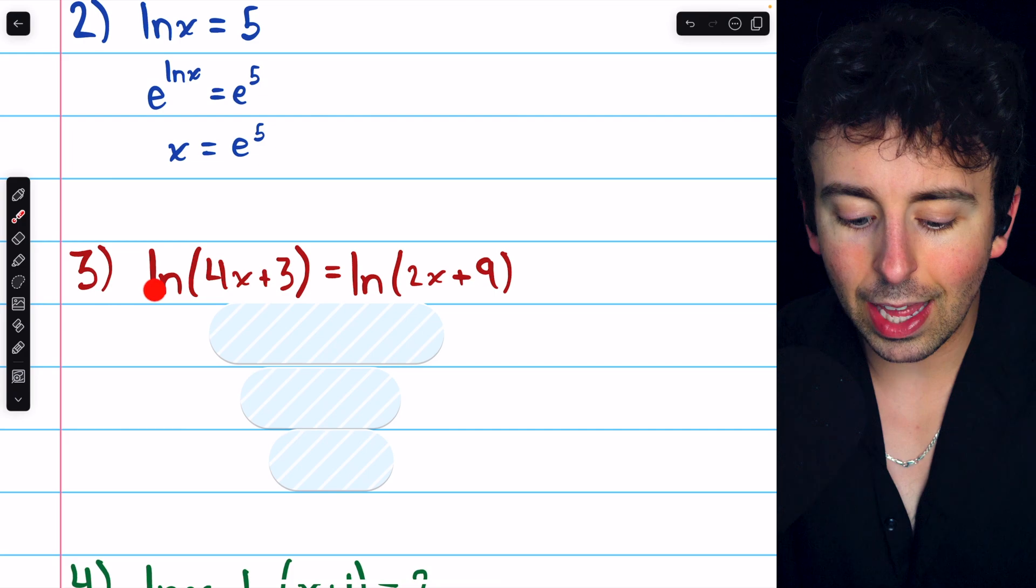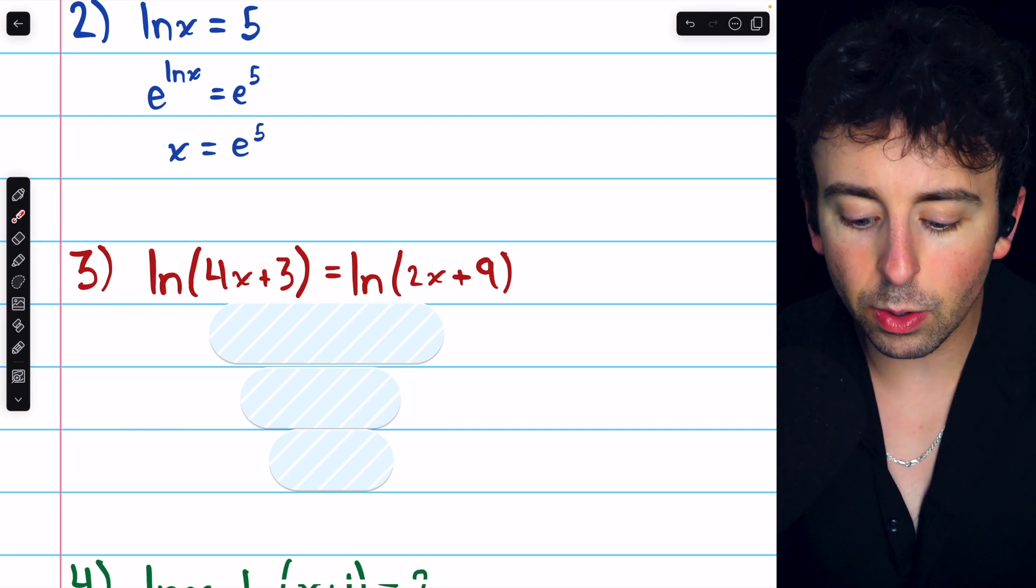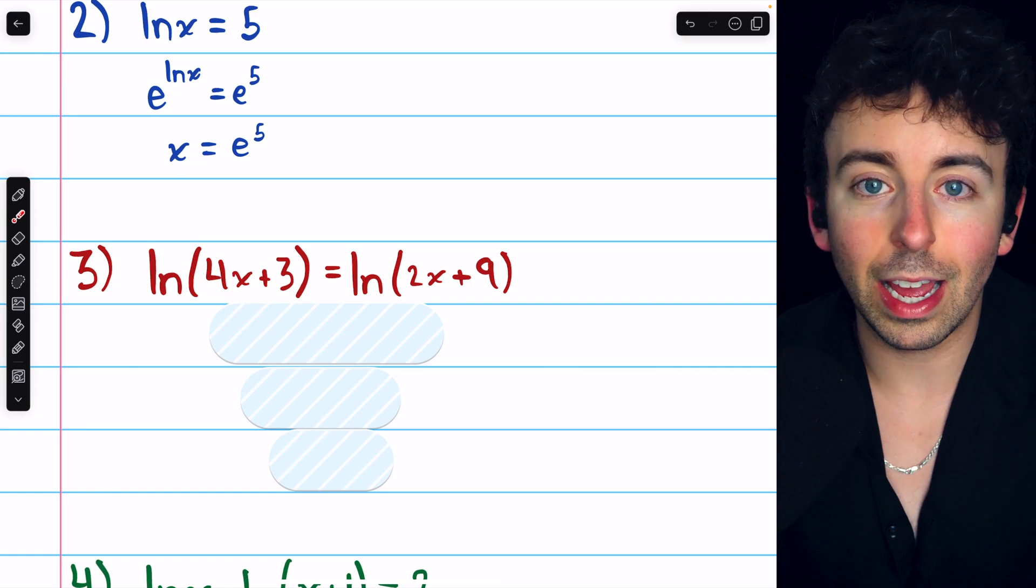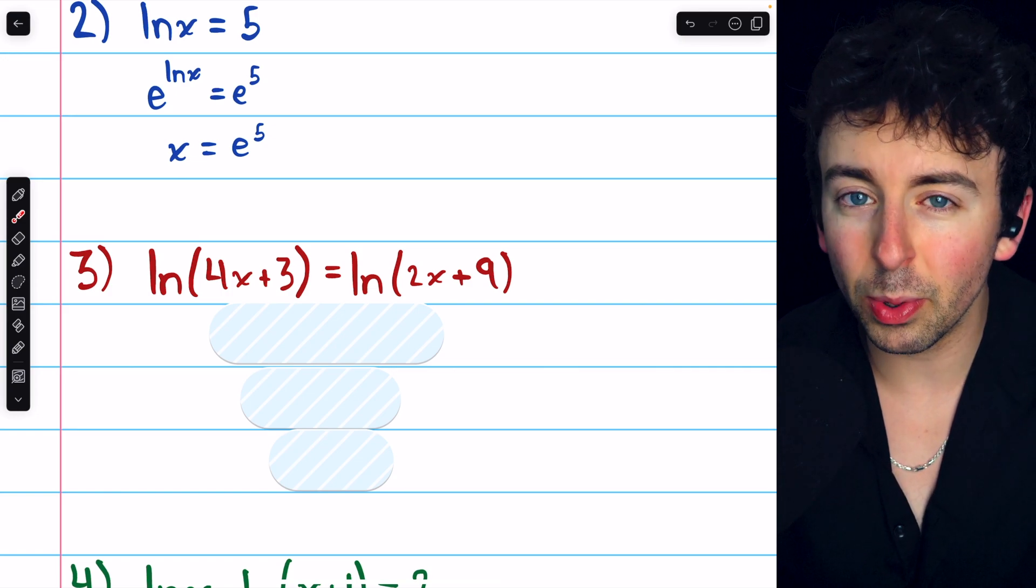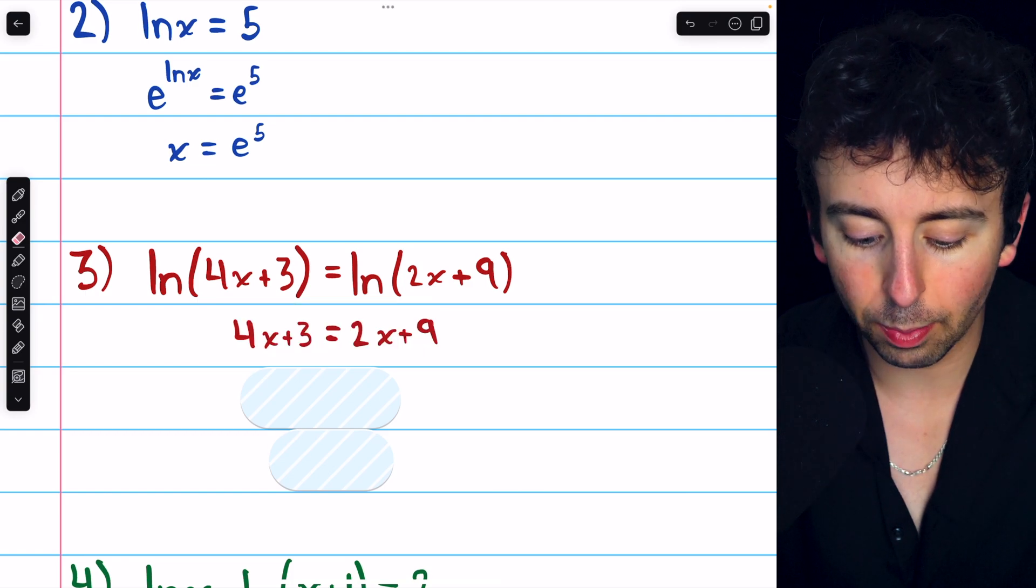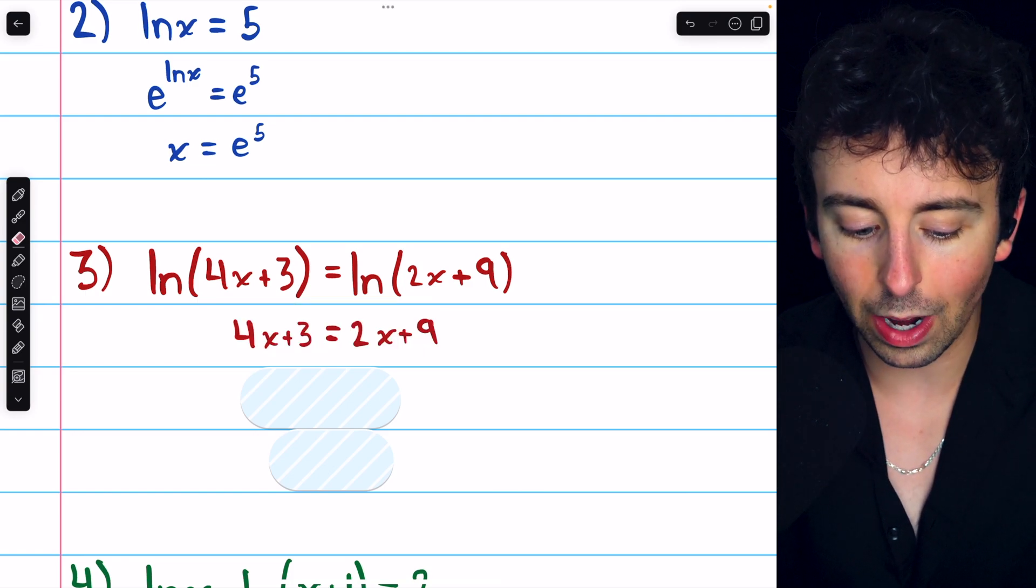In problem three, we have ln of 4x plus three equals ln of 2x plus nine. In this case, we just have two natural logs that are equal, and so again, their inputs must be equal. Hence, 4x plus three must equal 2x plus nine.